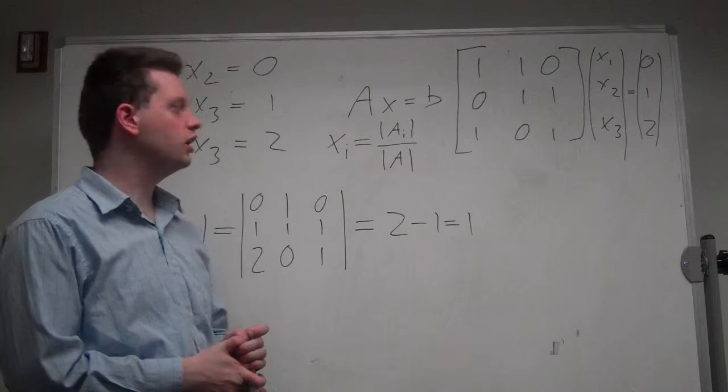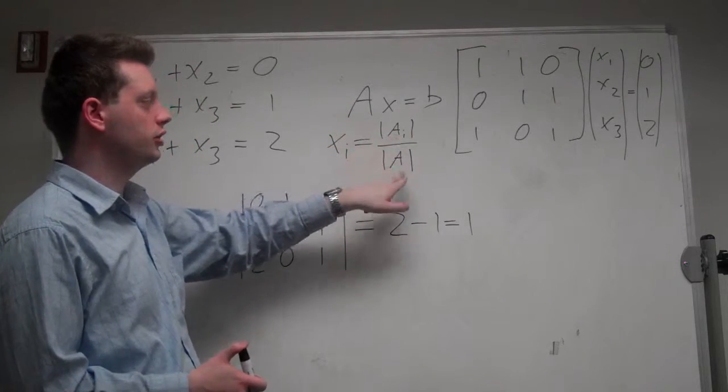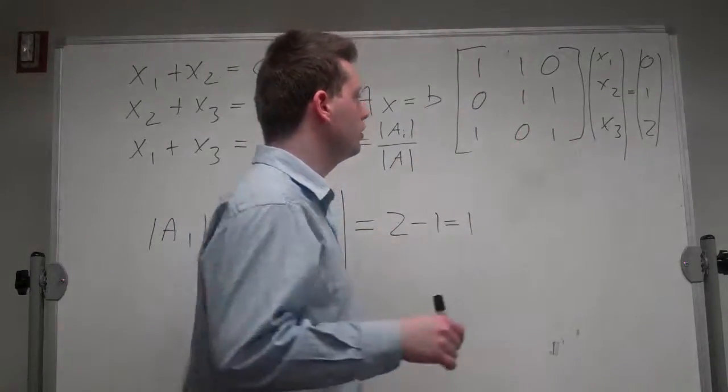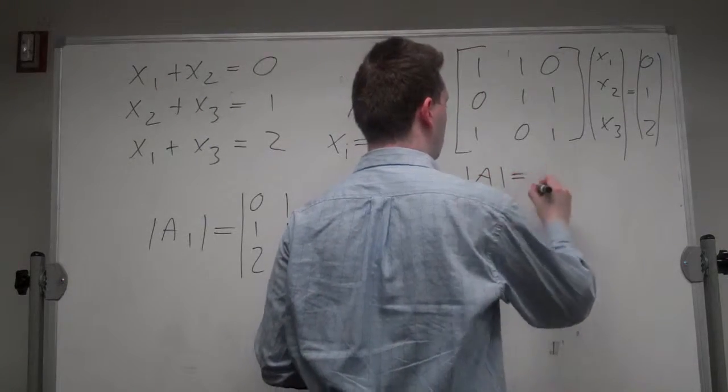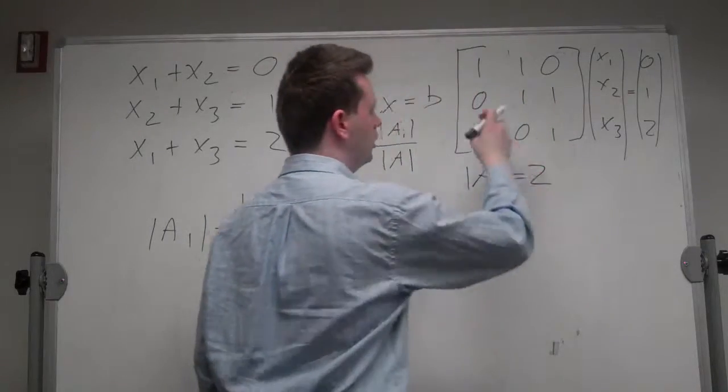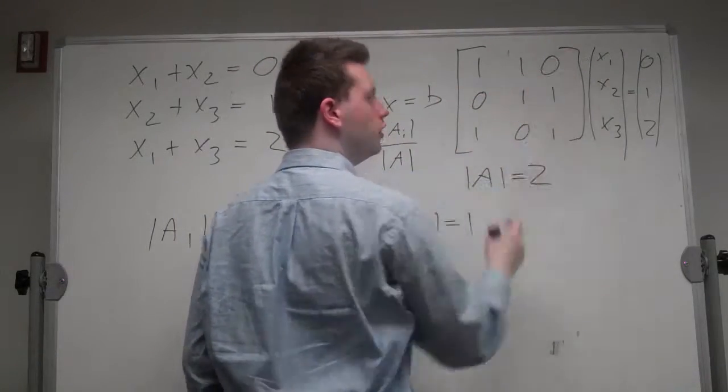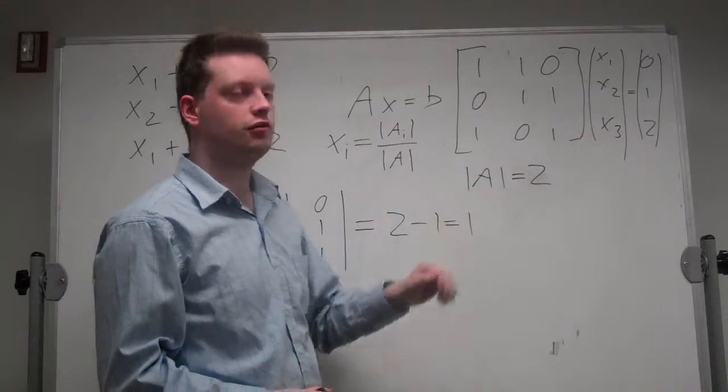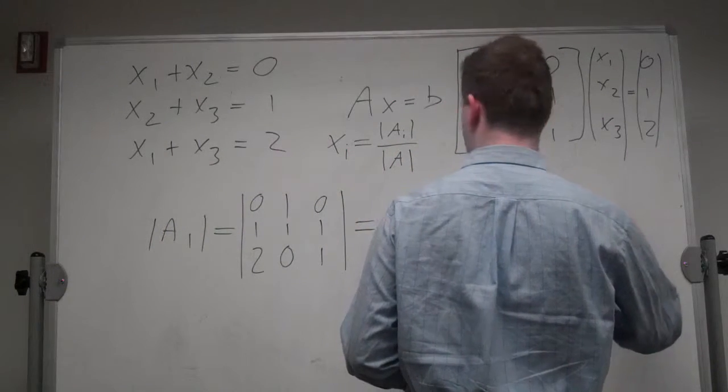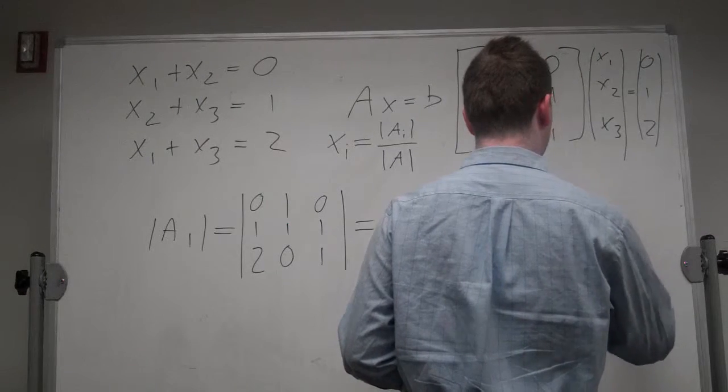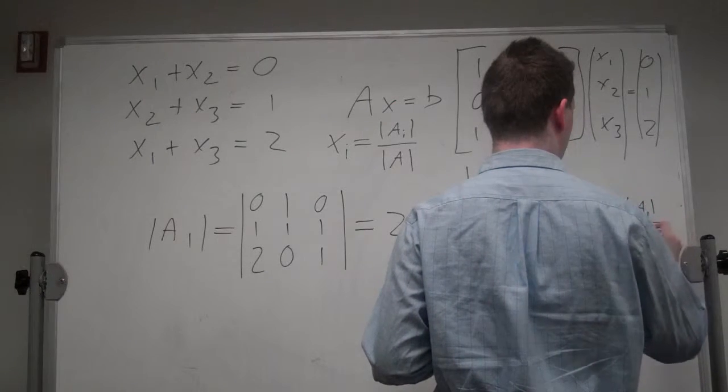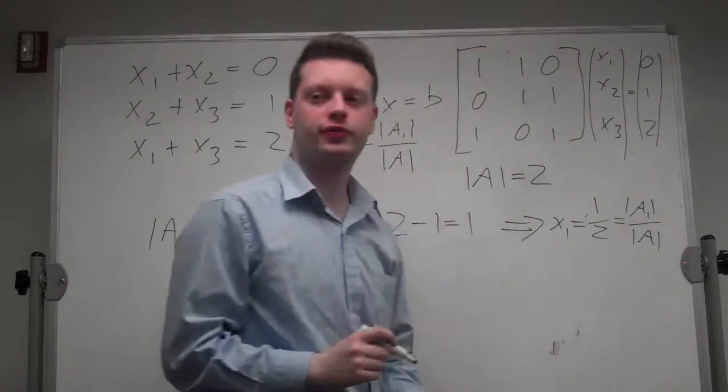Now, the next thing we need is the determinant of A, right? Because we have Ai over A. So this determinant here is simply 1 plus 1, and the other diagonals are 0, so it's just 2. And we can get x1 is equal to 1 over 2, which is equal to the determinant of A1 over the determinant of A.